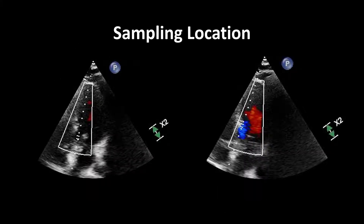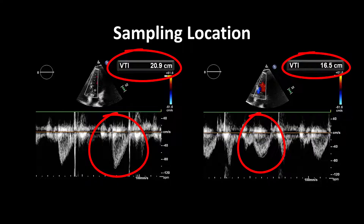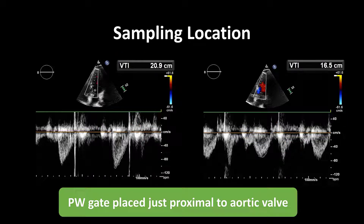Let's go over a few sampling location errors. In order to obtain a good LVOT VTI, we need to be in the LVOT. On the left, the pulse wave gate is placed in the LVOT just proximal to the aortic valve. On the right, the pulse wave gate is placed a little bit higher up in the LVOT. On the left we have that nice envelope, but on the right the envelope looks morphologically different — we don't see the aortic valve closure, so we know we're further up in the LVOT and the VTI is underestimated. Make sure the pulse wave gate is placed just proximal to the aortic valve itself; seeing the aortic valve closure can reassure you that you're in the right location.